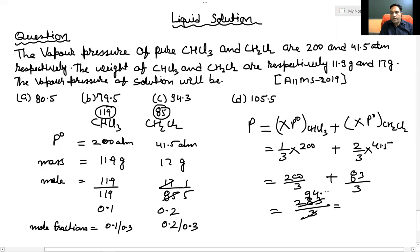That is 3 into 9 is 27, and 3 into 4 is 12, giving 94.3 atmosphere. In the options, atmosphere is not written, but 94.3 is written. So this is our right answer.